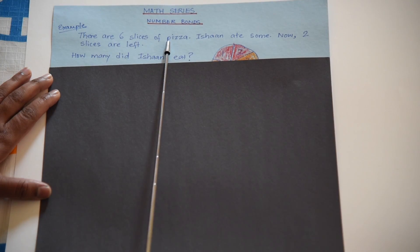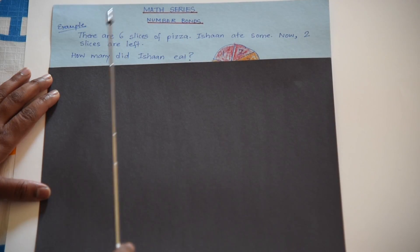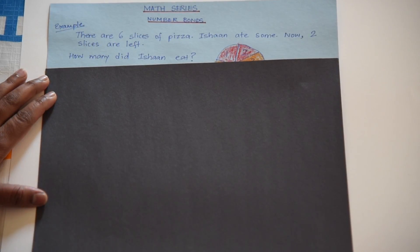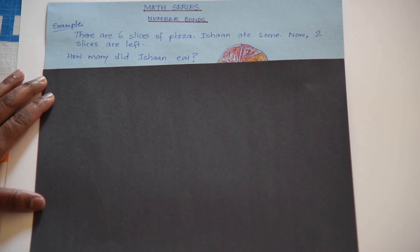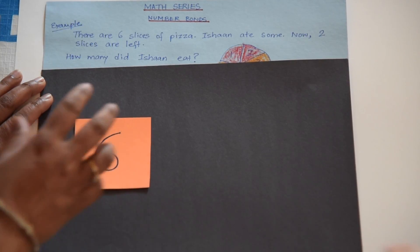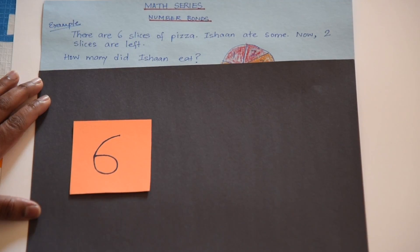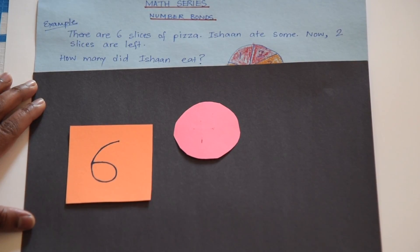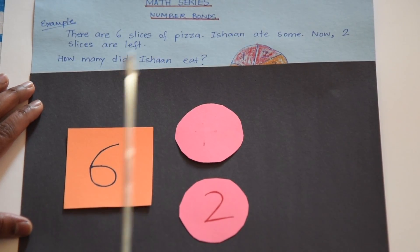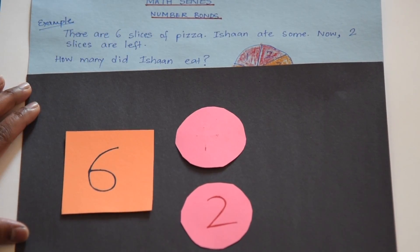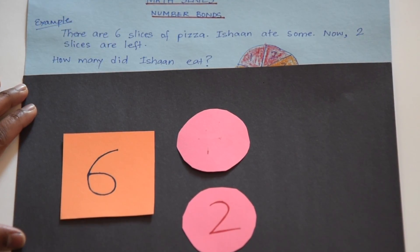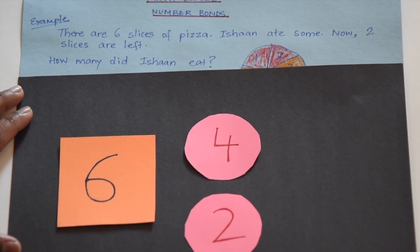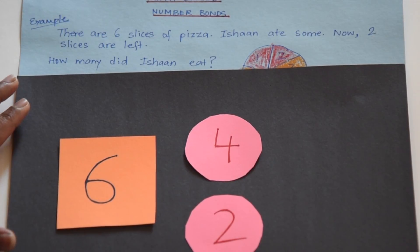There are 6 slices of pizza. Ishaan ate some. Now 2 slices are left. How many did Ishaan eat? 4. Let's do this with the help of number bonds. We have 6 slices — that's the total. Ishaan ate some — a part. 2 slices are left — another part. We need to find the missing number, so this is a subtraction problem. Do you remember the number bond of 6? 6 is made of 4 and 2. So 4 is the answer. The subtraction number sentence is 6 minus 2 equals 4. Great job.